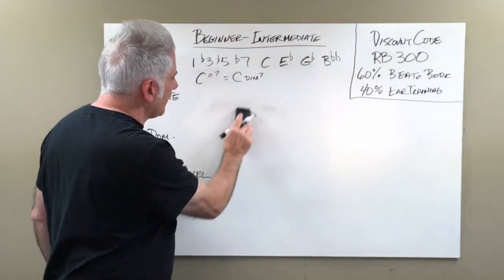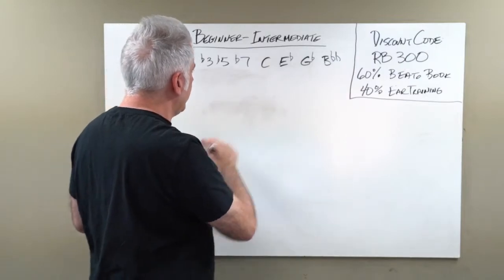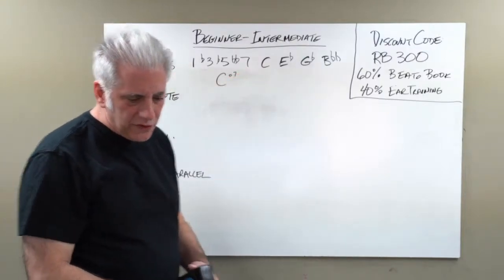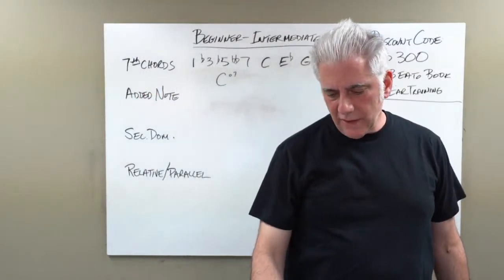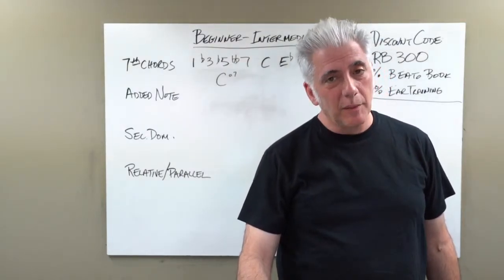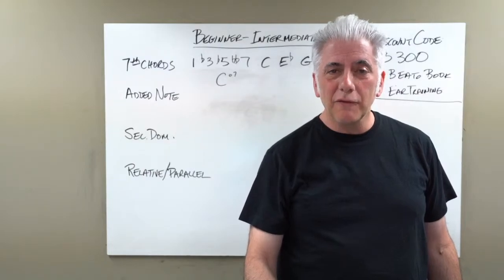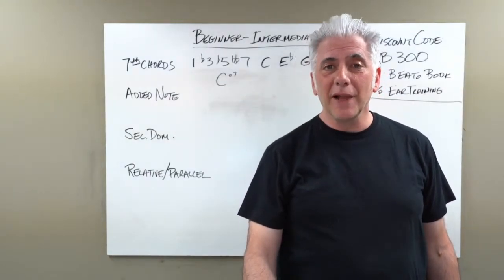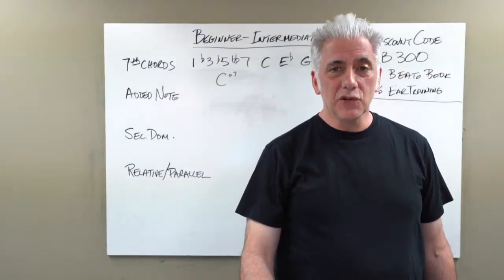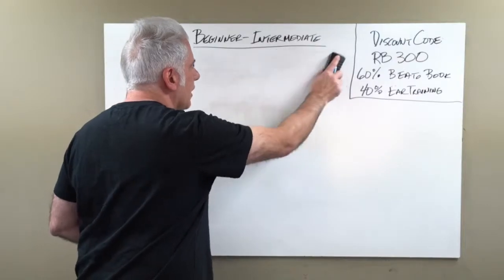The double flatted 7 with diminished: if you take a major 7, you can make it a minor 7 or flat 7, or a double flat 7. B double flat is actually A. So C diminished is 1, flat 3, flat 5, double flat 7 - that's a flat 7 on a minor 7 flat 5, giving you the diminished 7.